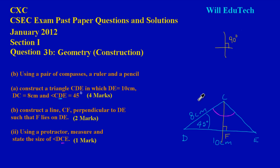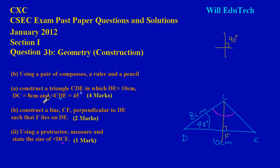Hi guys, welcome back on Will EduTech. In this video we'll be looking at a CSEC math exam past paper question — January 2012, question 3b. You'll find this under the geometry section, specifically a construction question. It states: using a pair of compasses, a ruler and a pencil, construct a triangle CDE in which DE equals 10 cm, DC equals 8 cm, and angle CDE equals 45 degrees — that's an easy four marks.